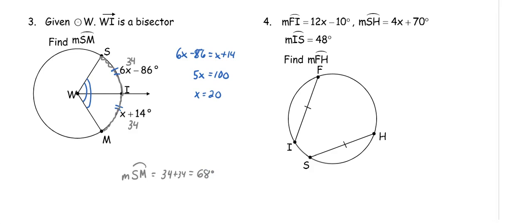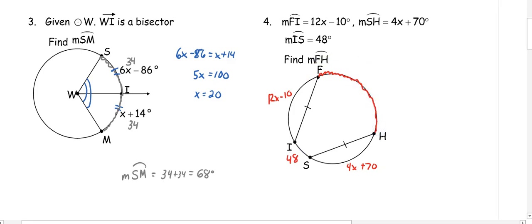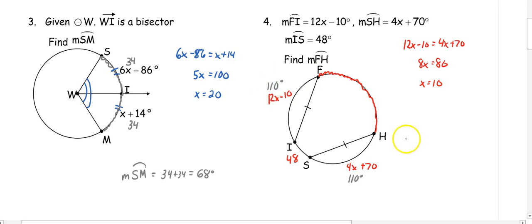In number four, arc FI is 12X minus 10, SH is 4X plus 70, and IS is 48. We want to find arc FH. First, solve for X: 12X minus 10 equals 4X plus 70, so 8X equals 80 and X is 10. Substituting, both arcs are 110 degrees. To get arc FH: 360 minus 110 minus 110 minus 48 minus 10, which gives arc FH equal to 82 degrees.